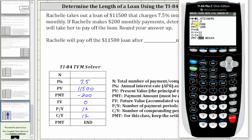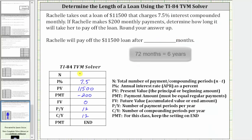It's important to recognize that N is in months because the interest is compounded monthly and we have monthly payments. We're told to round up, so we round this up to 72. It will take 72 months for Rachel to pay off the loan. I hope you found this helpful.